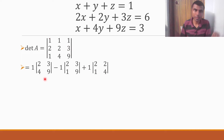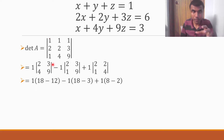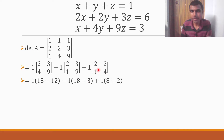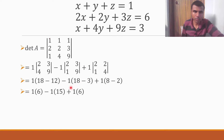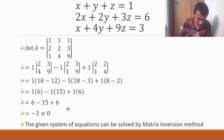Now simplifying: det[2 3; 4 9] = 2×9 − 4×3 = 18 − 12 = 6. Then det[2 3; 1 9] = 18 − 3 = 15. And det[2 2; 1 4] = 8 − 2 = 6. So det(A) = 1×6 − 1×15 + 1×6 = 6 − 15 + 6 = −3, which is not equal to 0. So the given system of equations can be solved by the matrix inversion method.